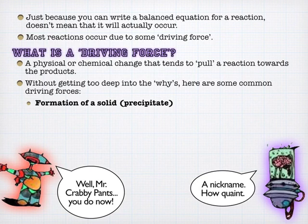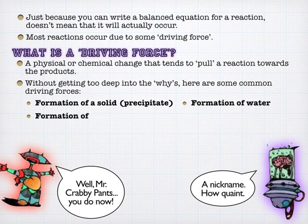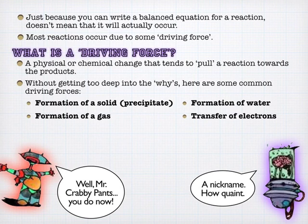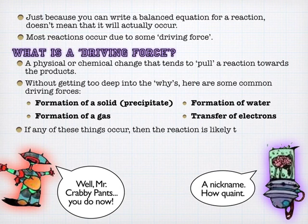The formation of a solid — a precipitate — where something falls out of solution essentially frees up the closet; a trap door opens and the widget falls through the floor. Formation of water is a little weird, but imagine you're just making more closet space. Production of a gas leaves the system upward. And transfer of electrons completes valence shells, making things more stable — so that's definitely a driving force.